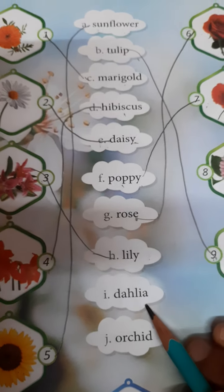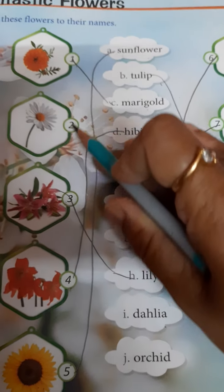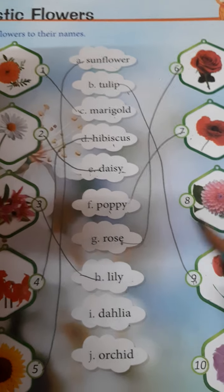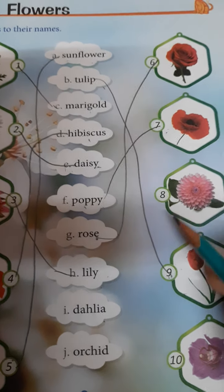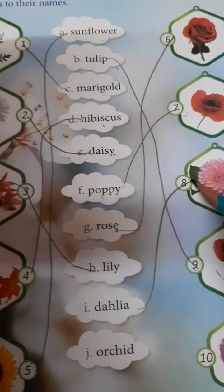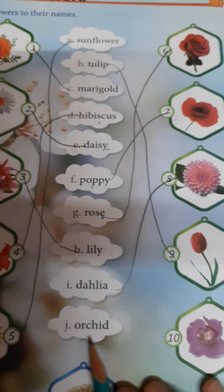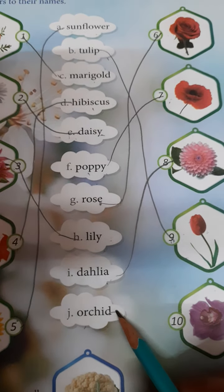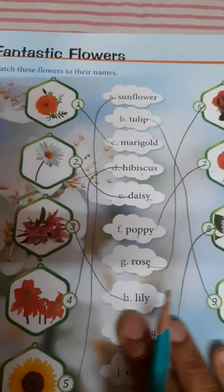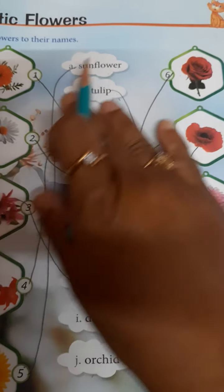Next is dahlia. So children, which one is dahlia? This one is dahlia. So you join like this. And last is orchid. This one is orchid. So this is the name of some fantastic flowers.